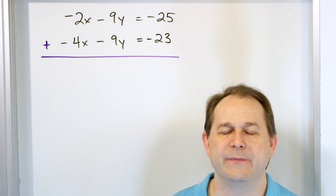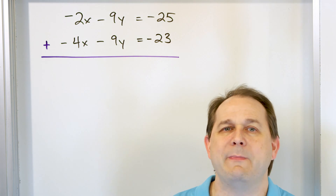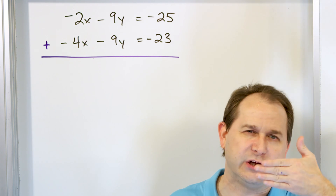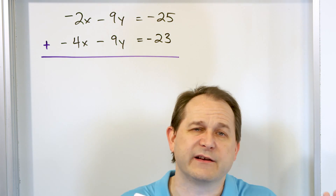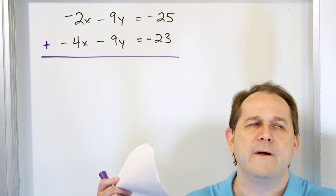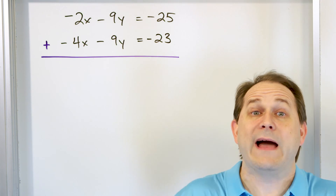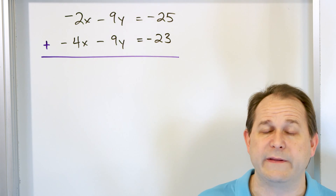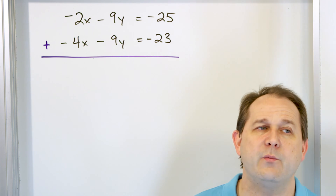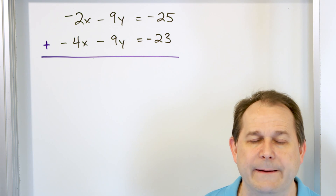What you have to do is change one of the equations in order to make it cancel one of these terms. That's why there's a little step you have to do in the beginning here. If it's not already set up so that something will cancel, then you have to do something legal within the rules of algebra to change one of them so that when you add them together, one of those terms will drop away.